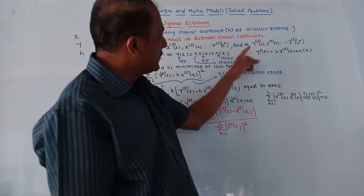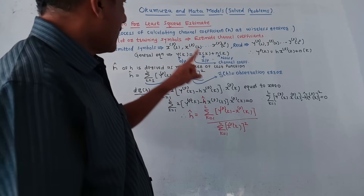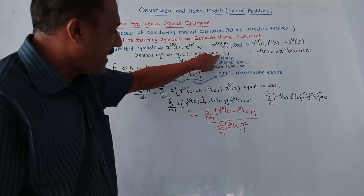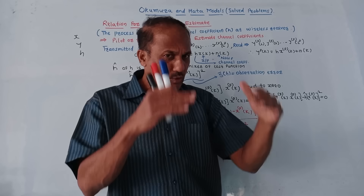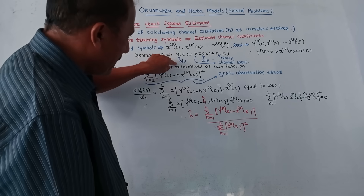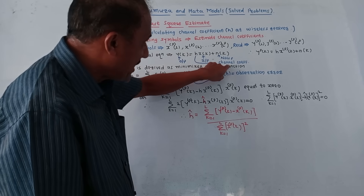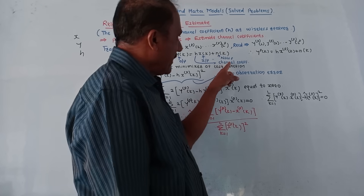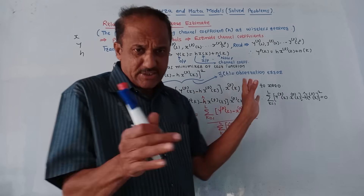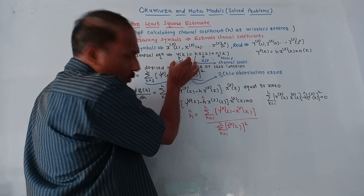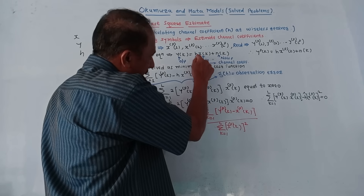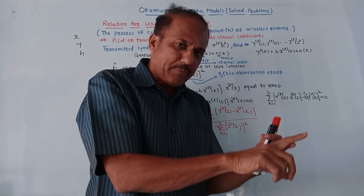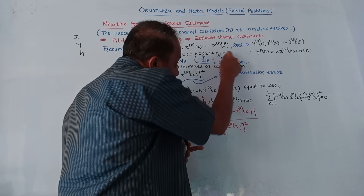Y stands for received symbols and p stands for pilot symbols. The general expression is: y(k) = h · x(k) + n(k). This is the general expression to calculate the output at the receiver. y(k) represents output, h represents channel coefficient, x(k) represents input, and n(k) represents the noise. The output obtained at the receiver contains h times the input signal, meaning the input symbol is multiplied by the channel coefficient and noise is added.